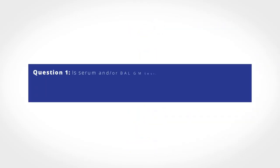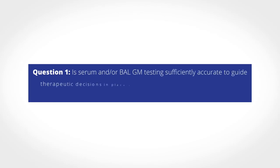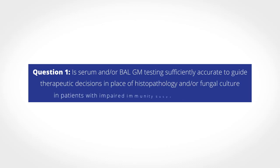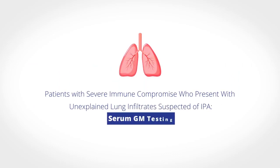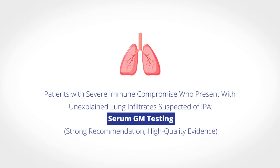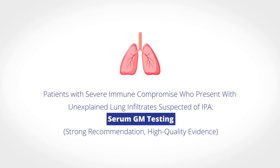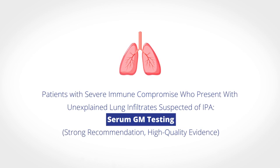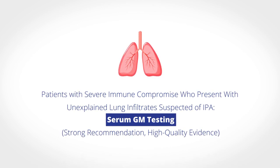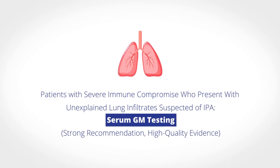Question 1 asks: Is serum and/or bronchoalveolar lavage galactomannan testing sufficiently accurate to guide therapeutic decisions in place of histopathology and/or fungal culture in patients with impaired immunity suspected of having invasive pulmonary aspergillosis? In patients with severe immune compromise, such as those with hematologic malignancy or recipients of hematologic stem cell or solid organ transplants who present with unexplained lung infiltrates suspected of invasive pulmonary aspergillosis, the panel recommends the use of serum galactomannan testing.